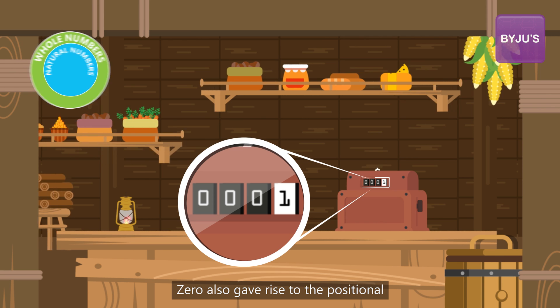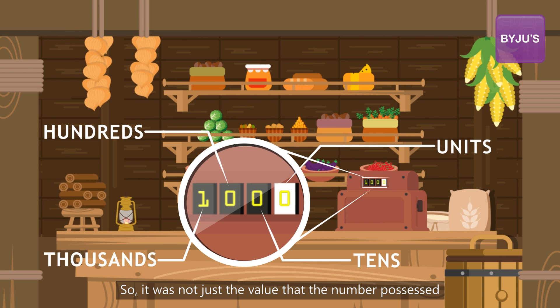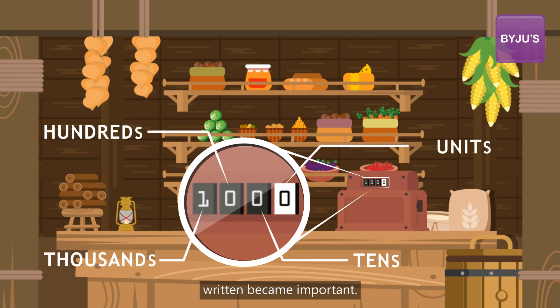Zero also gave rise to the positional or the decimal system. So it was not just the value that the number possessed, but also the place where it was written became important.